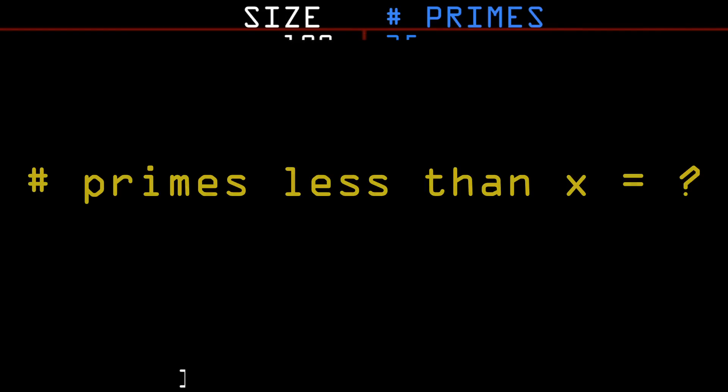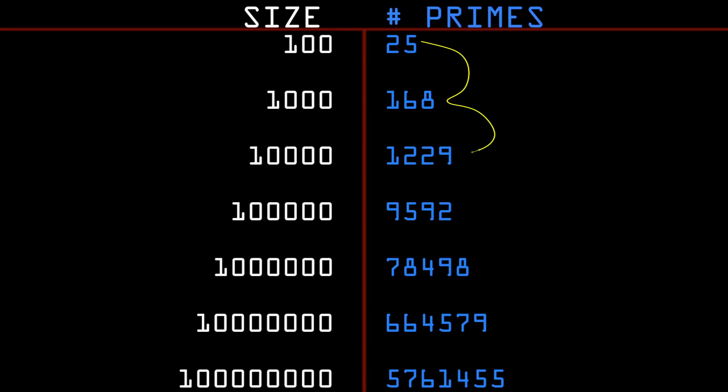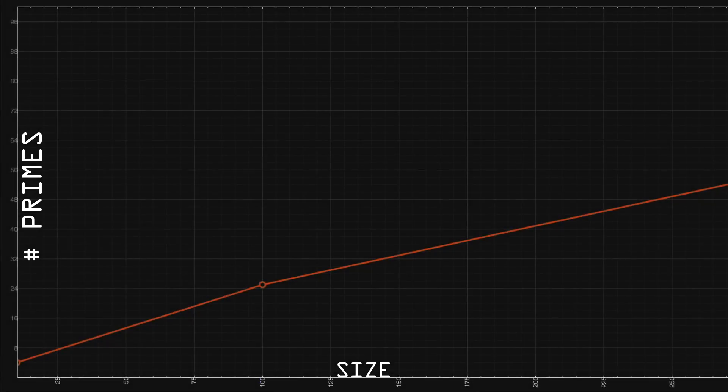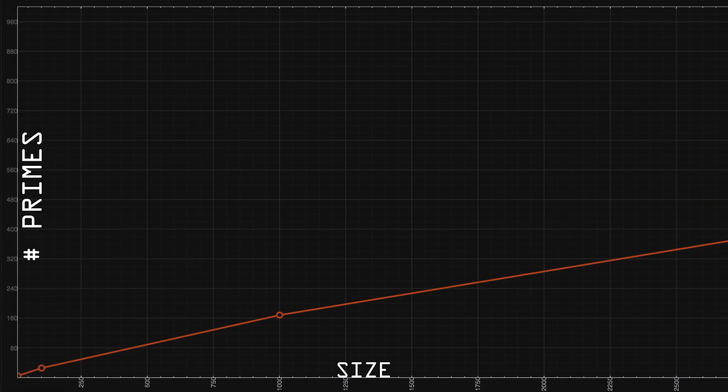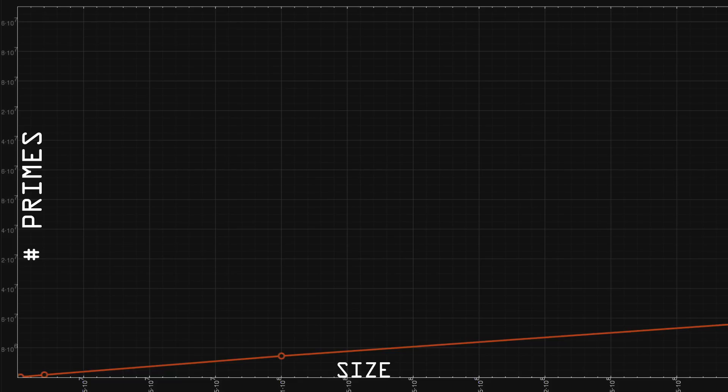If we make a table we see the number of primes is always increasing though as we search further we find fewer and fewer. Let's graph the number of primes found on the vertical axis and the search size x on the horizontal. As we zoom out to include billions of numbers notice the curve never flat lines. It's always rising albeit gradually.